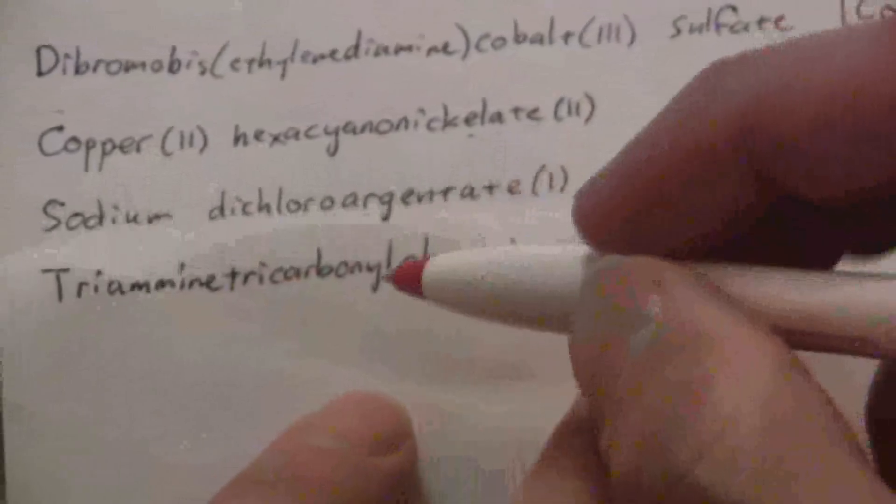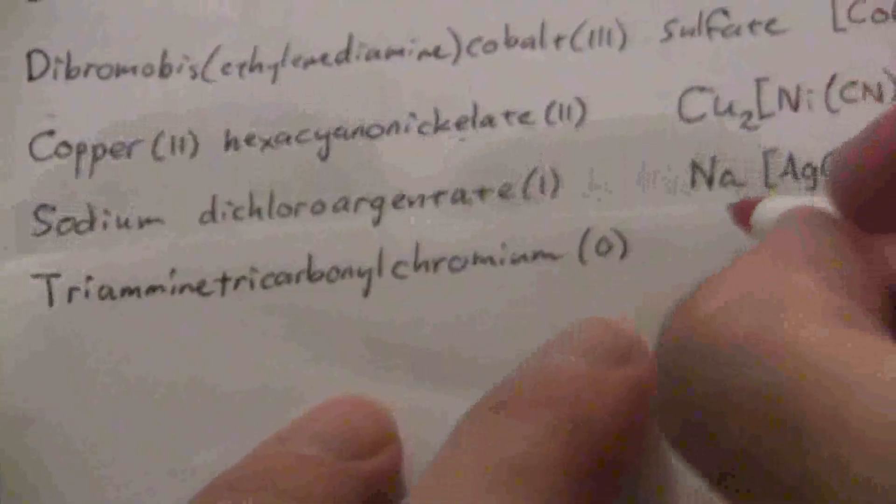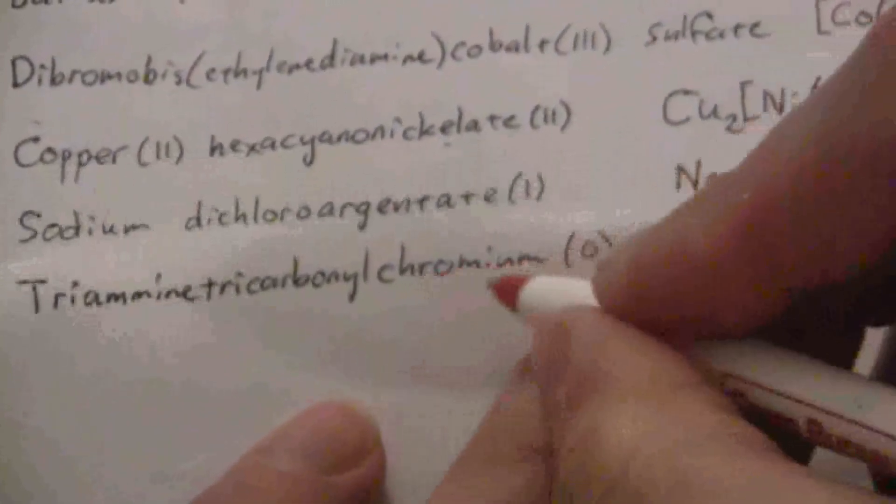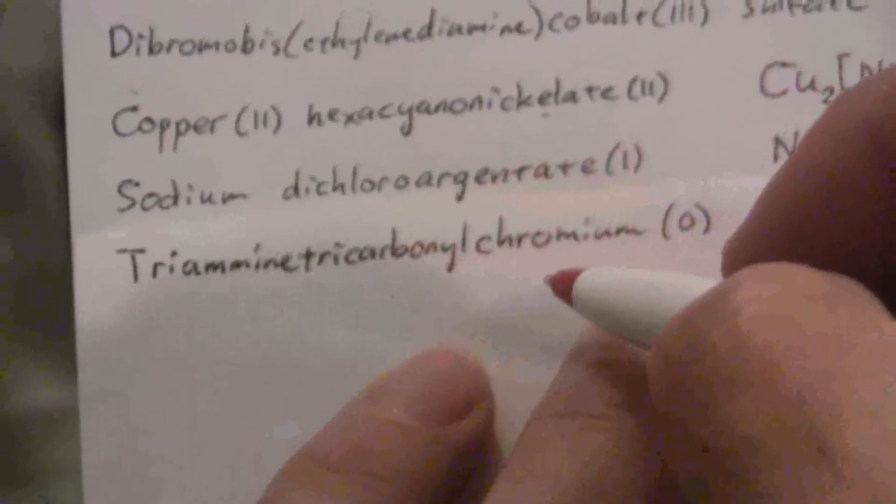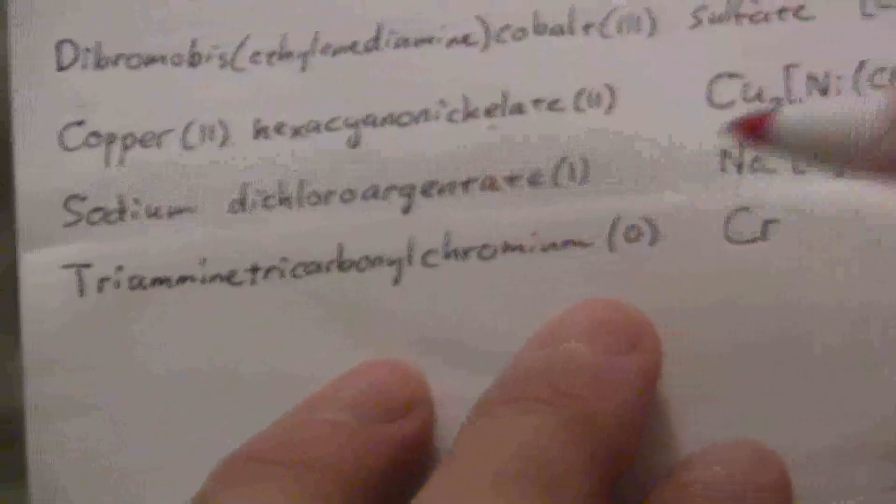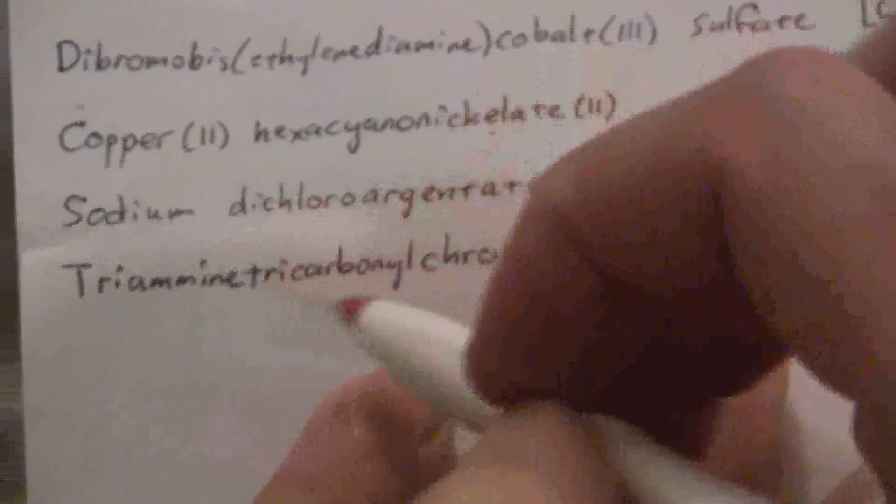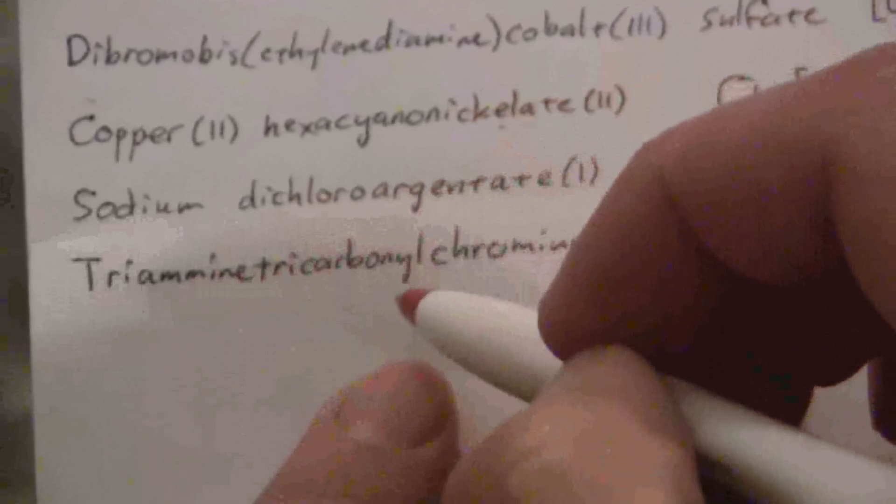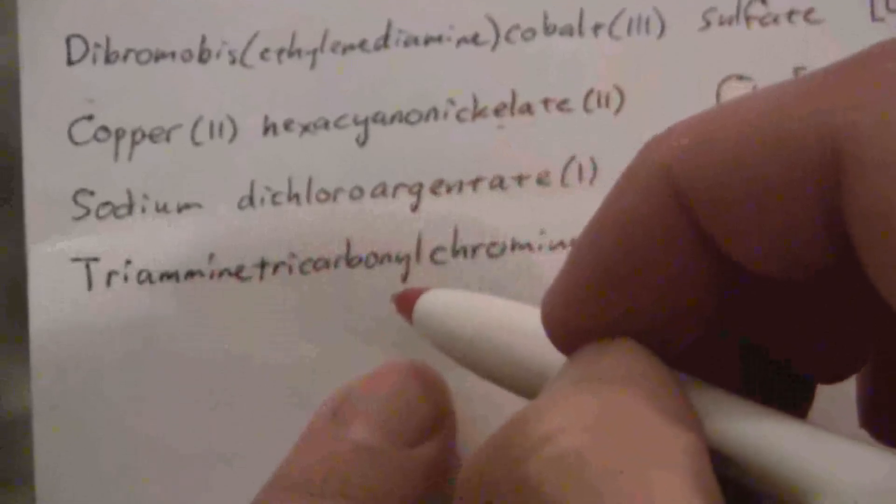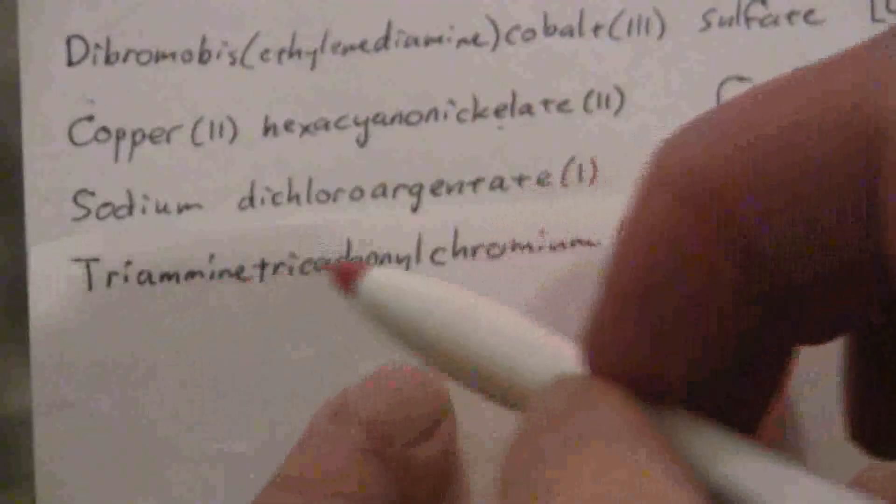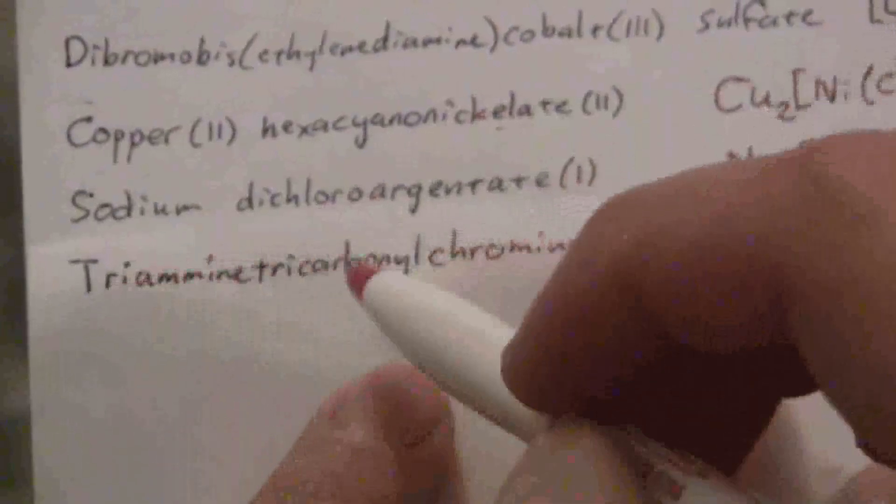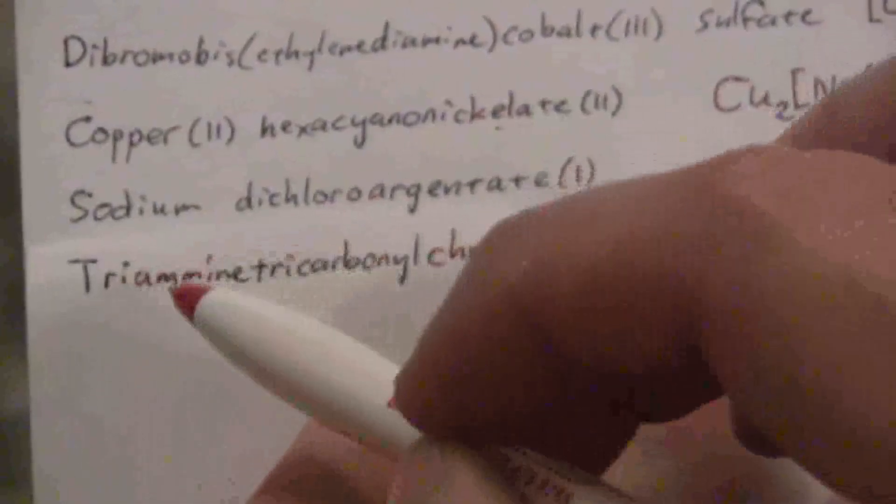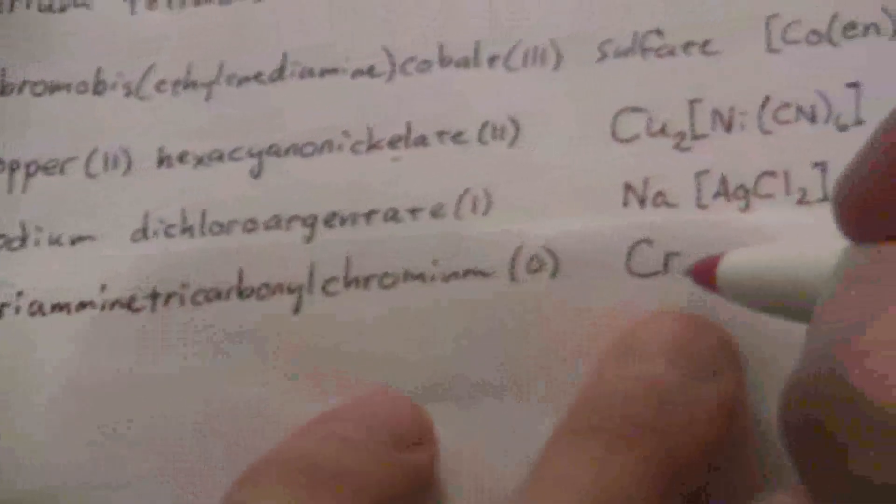So then the formula for this compound, we put the metal first, so chromium, and then triamine tricarbonyl. We're going to put these - these are both neutral ligands. So we put them in alphabetical order, similarly to the way that we do that in the name. We do it in the formula.